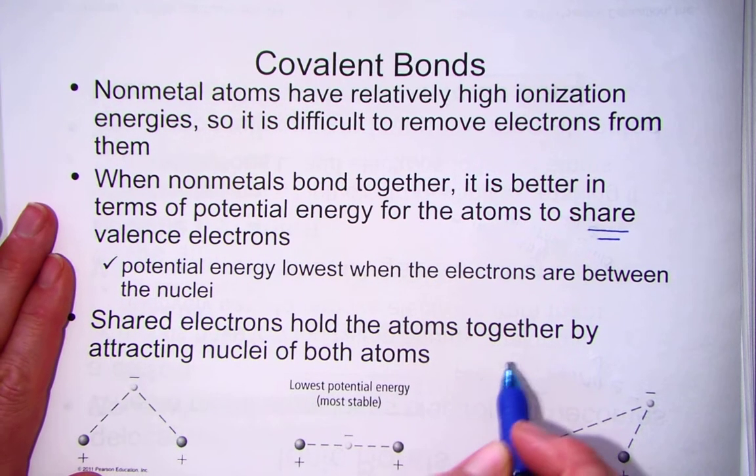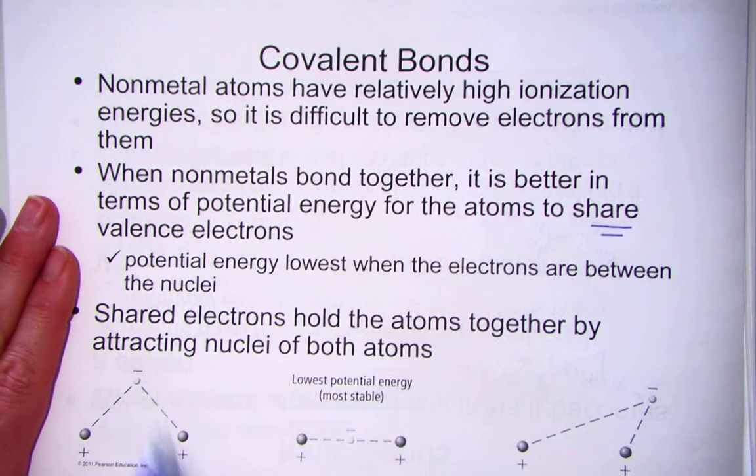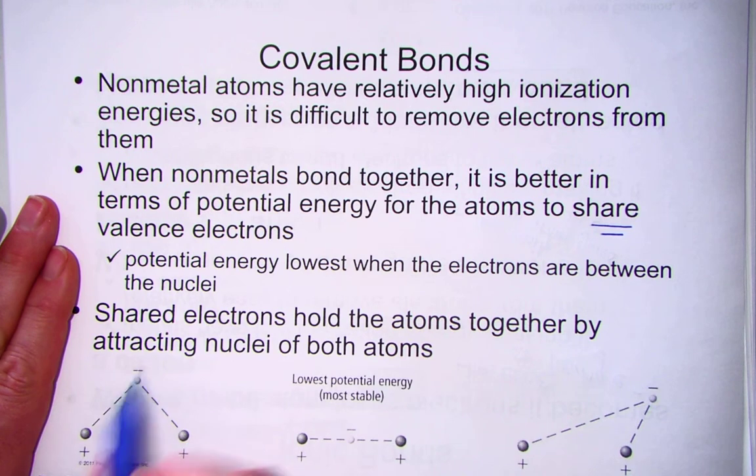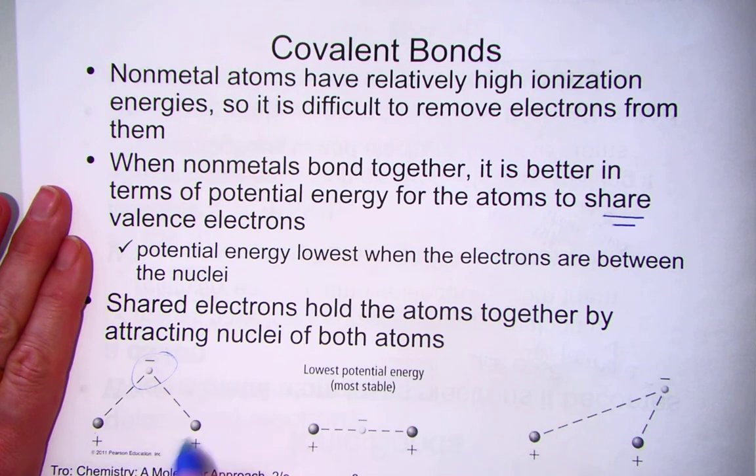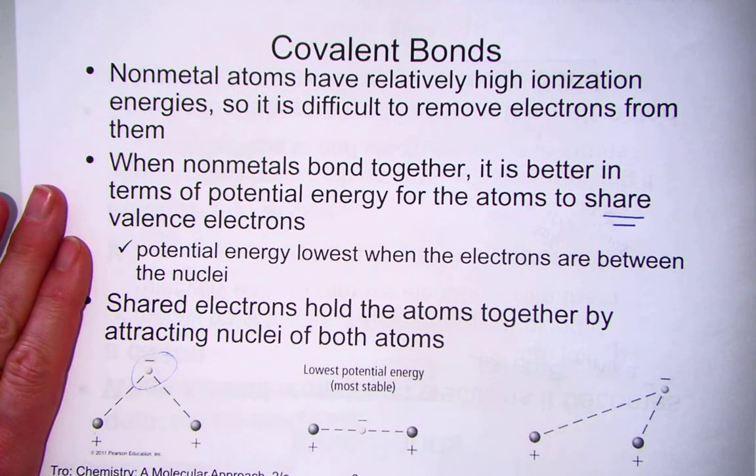Shared electrons hold the atoms together by attracting the nuclei of both atoms. Here's a structural picture of a water molecule. The oxygen here, up at the top, and the two hydrogens down below, they're sharing a pair of electrons between them.